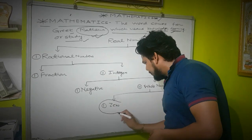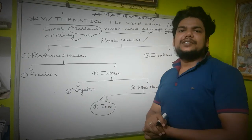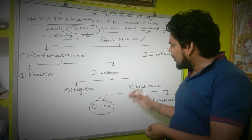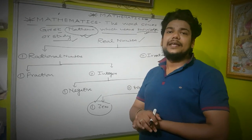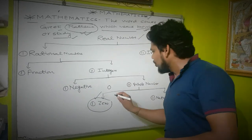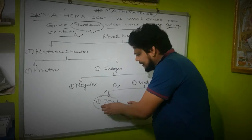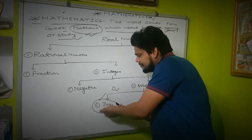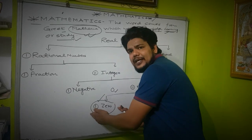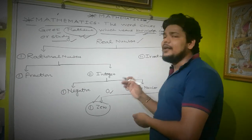First of all, we will discuss zero. Zero is an integer. If we use counting numbers, it means no object is present — that is zero. Zero is represented by the symbol '0.' Zero is an integer that can neither be negative nor positive. Integers can be negative or positive, but zero is neither. This is what real numbers include.